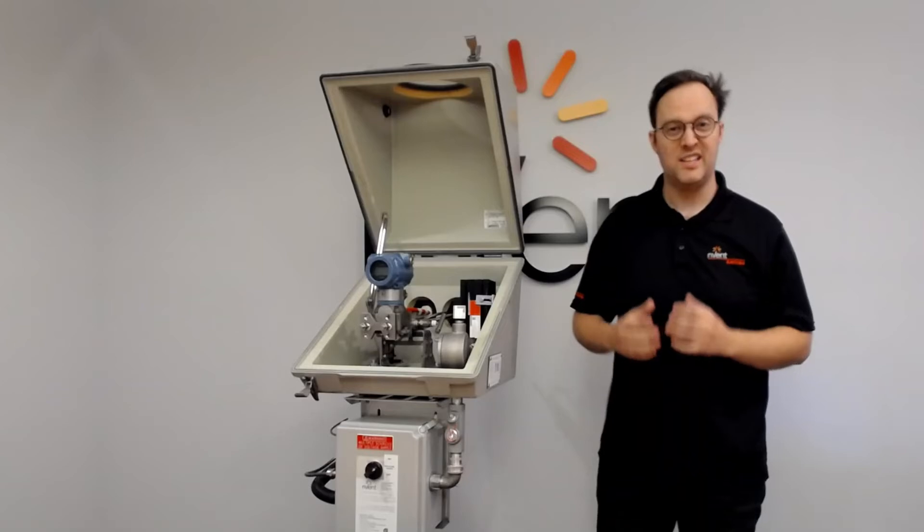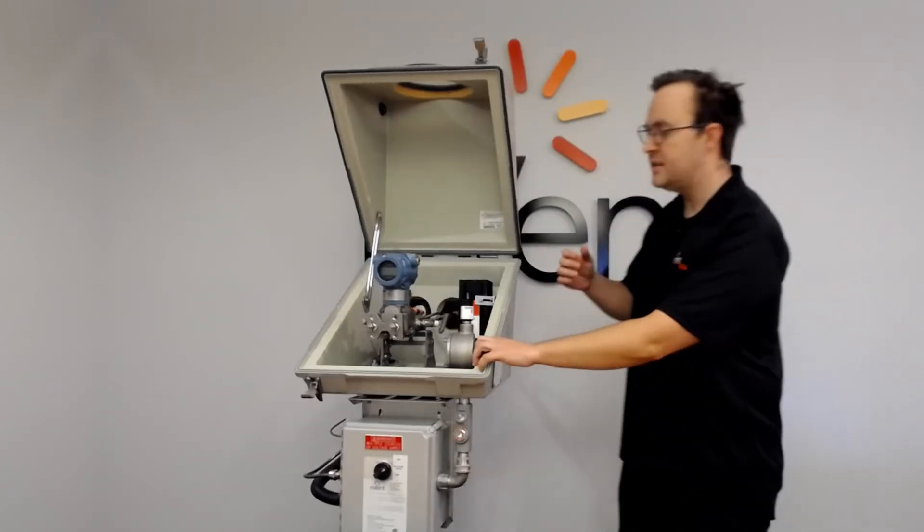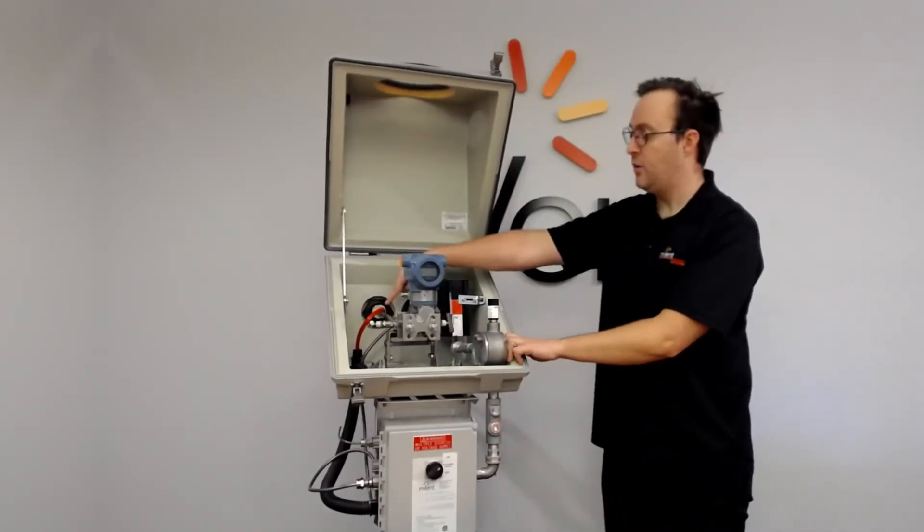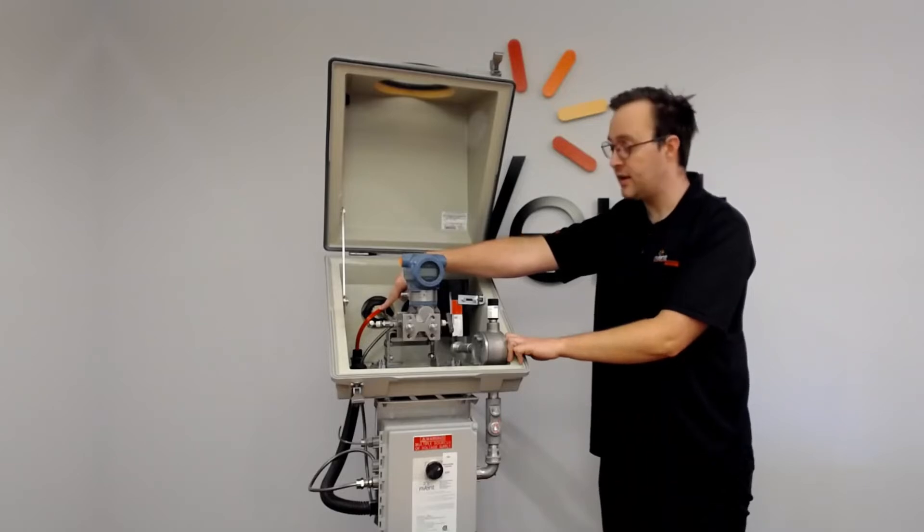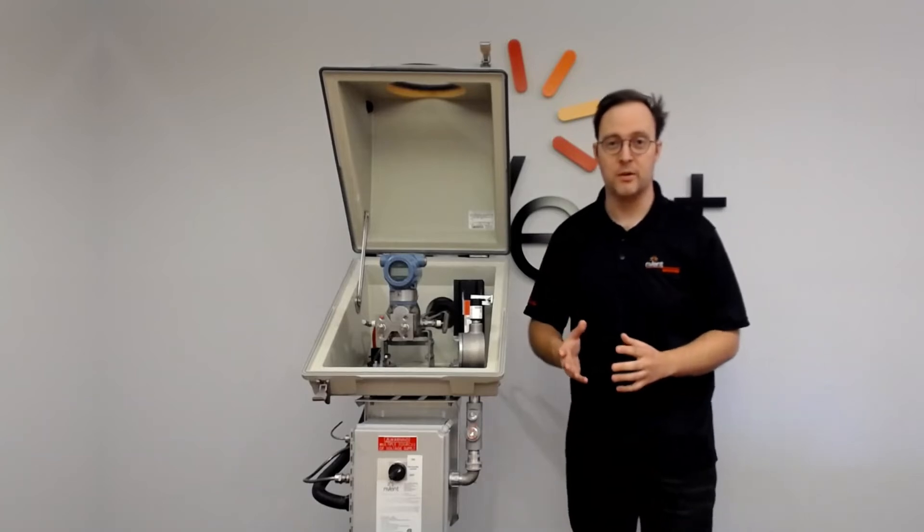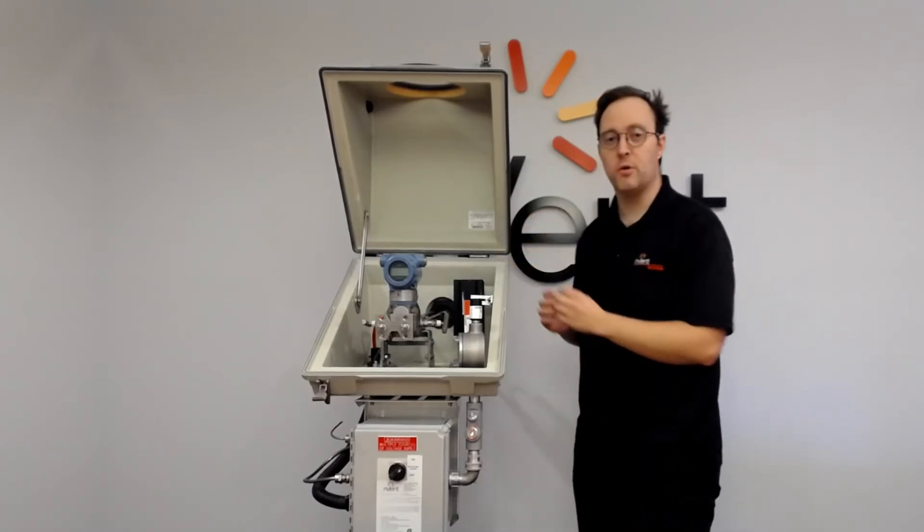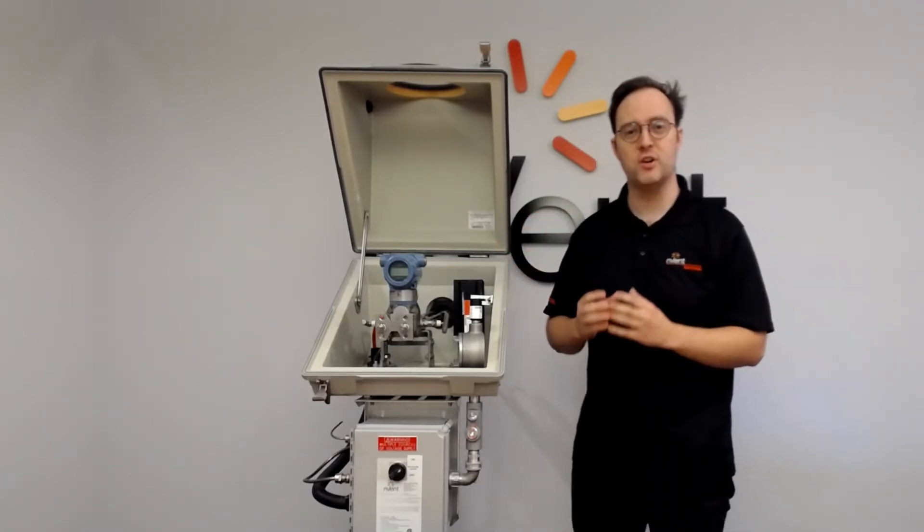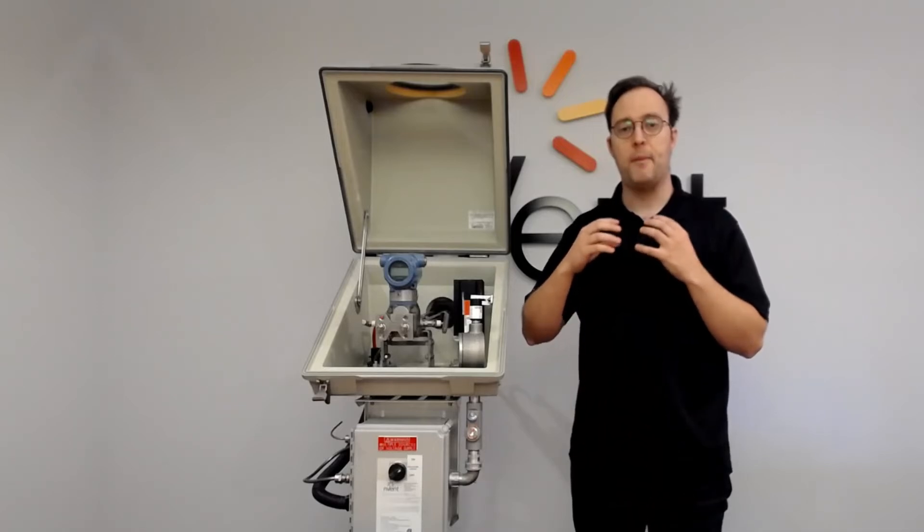The next thing to think about is EHT type. This demo has two types of EHT. We have SR, self-regulating, and MI. Usually you'll only see one type inside of an application. It's important to think about that early to make sure that the heat trace is sized for the application that you're using.